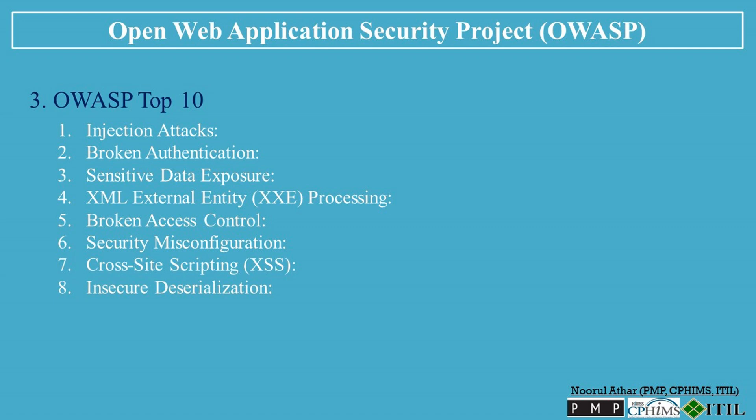Number 8: Insecure Deserialization. Insecure deserialization occurs when untrusted data is deserialized and executed as part of an application process. This could lead to remote code execution or data tampering. Always validate and sanitize input data before deserialization and avoid deserializing data from untrusted sources.